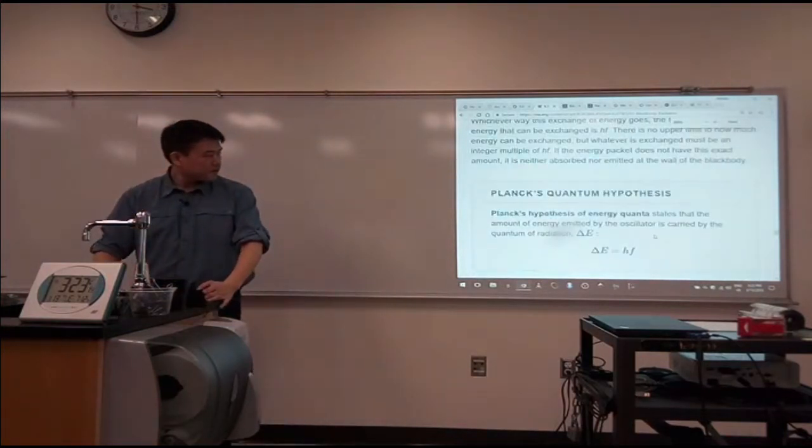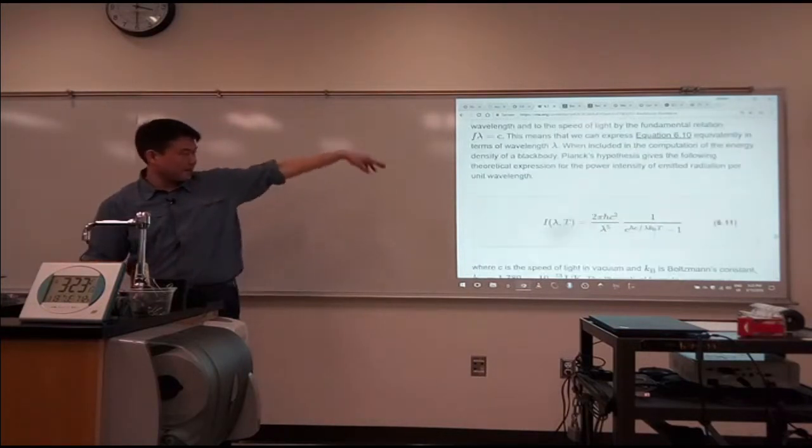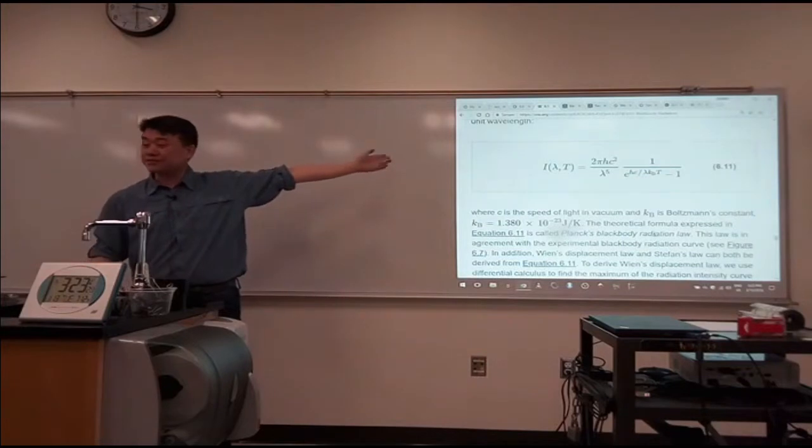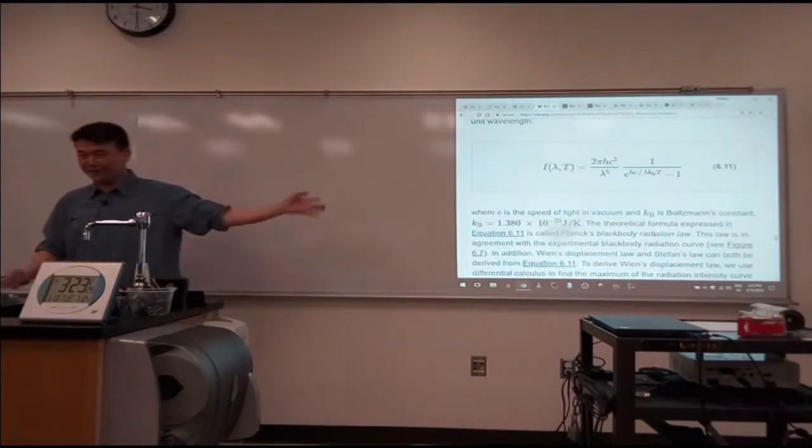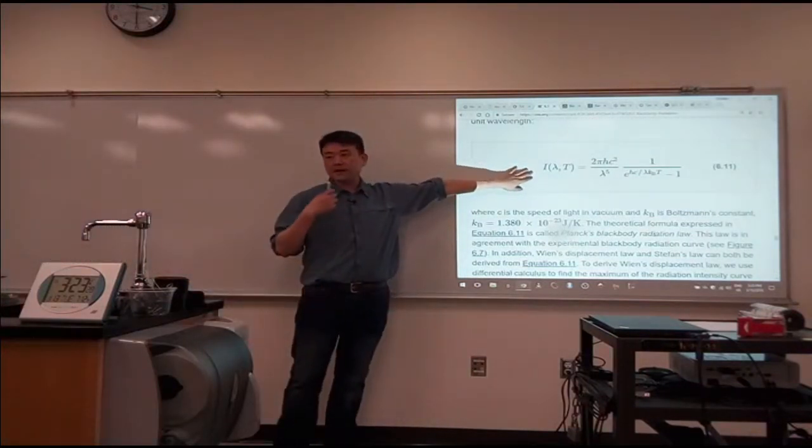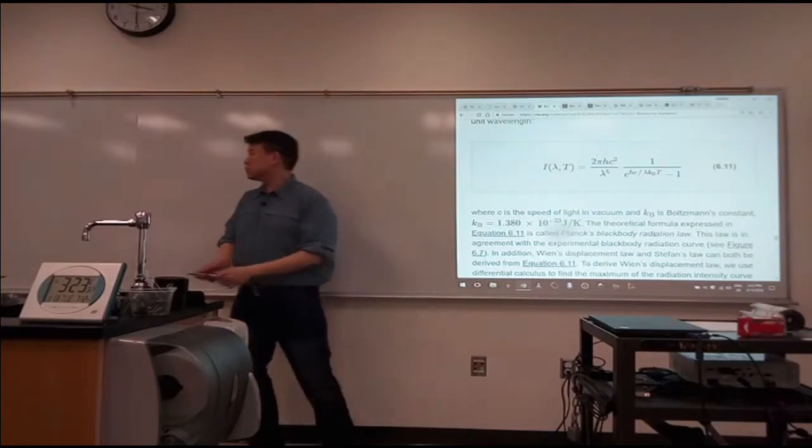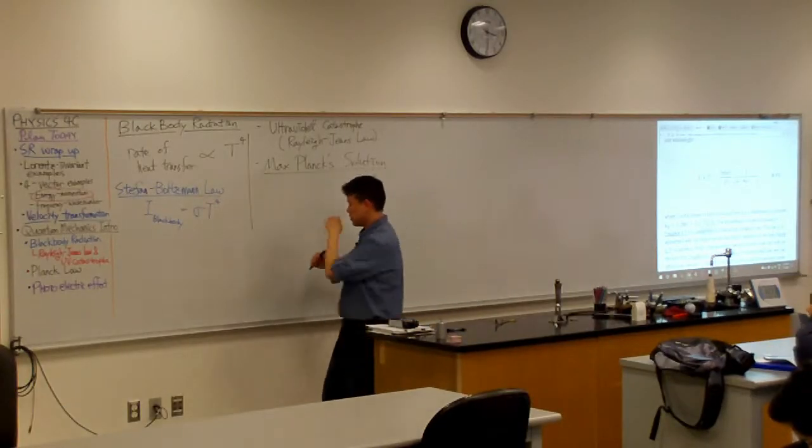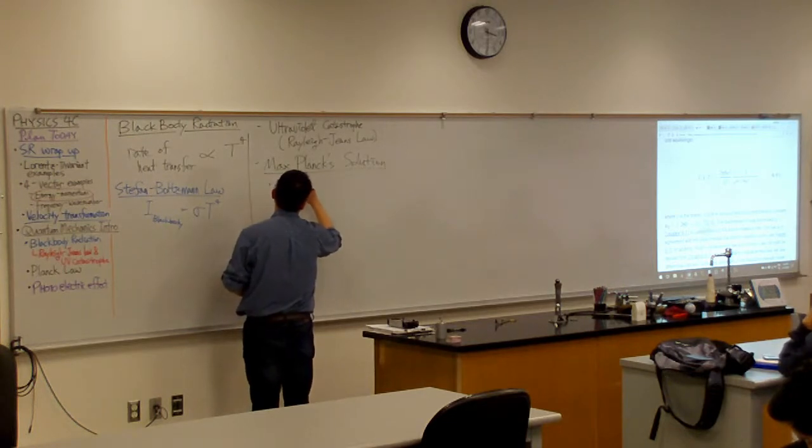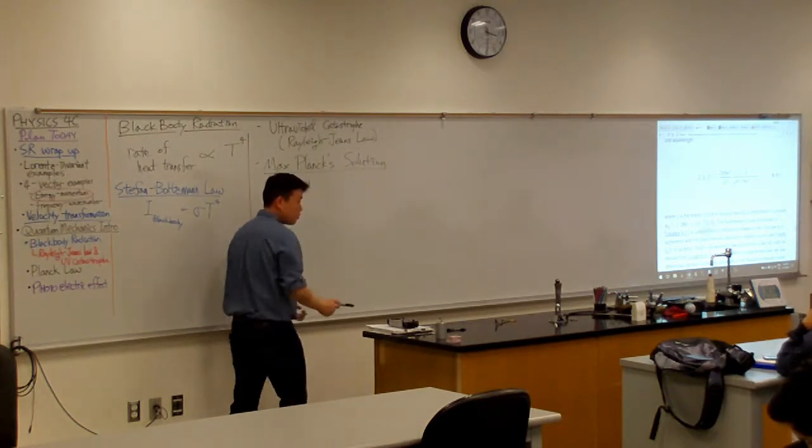And in order to derive this, yeah, I'll write it down on the board. In order to derive this expression, I'm putting this on the board because that's the one expression I don't have memorized. Everything else memorized. So to derive this, Planck had to make an assumption. So this is Planck's assumption. He assumed this way.